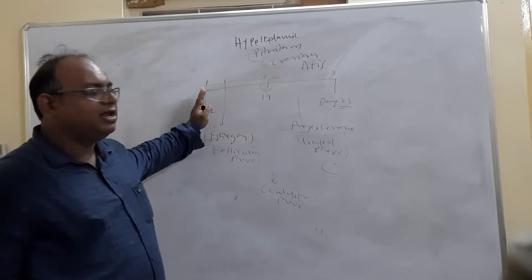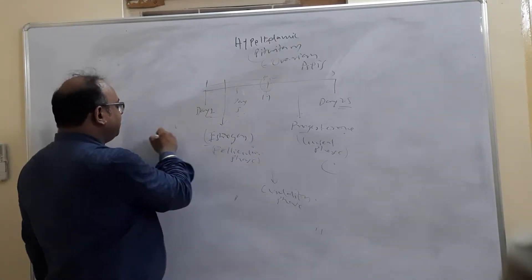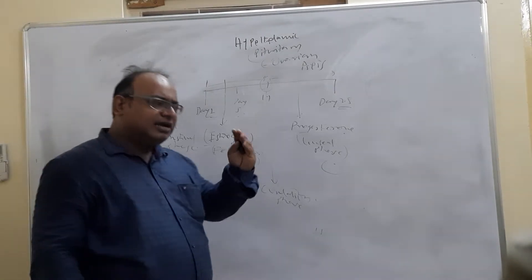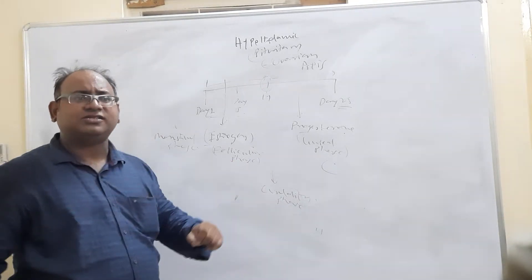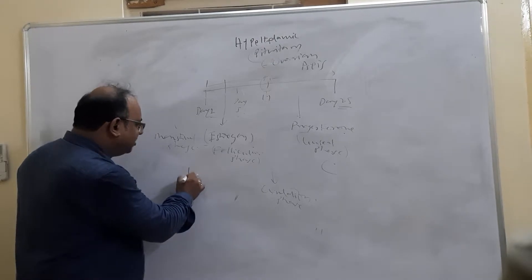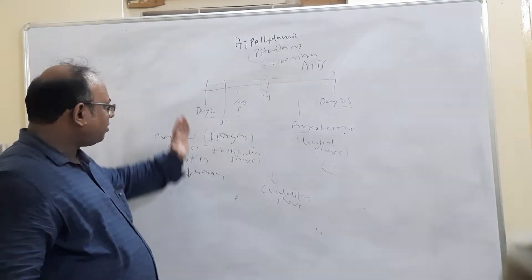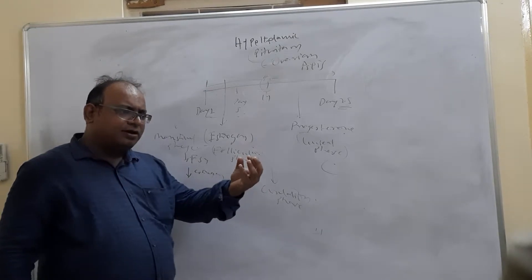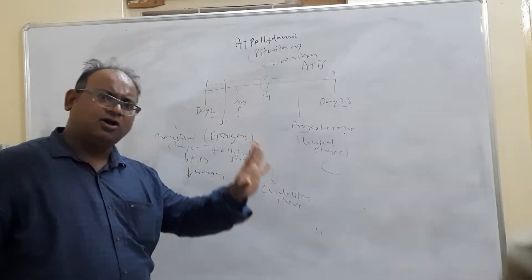Within the follicular phase, day 1 to day 5 is called the menstrual phase, because actual menstruation takes place. Ideally it is for 5 days, but there could be variations — some women have 3 or 4 days. On day 1, the start of the menstrual cycle, the levels of estrogen and follicle-stimulating hormone are at their minimum. When FSH is at a low level, maturation of ovarian follicles will not occur, so estrogen level will also be low.